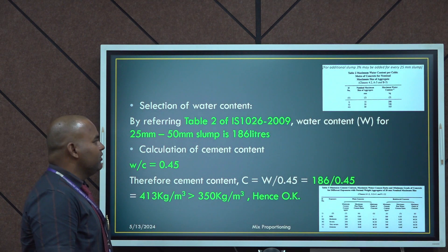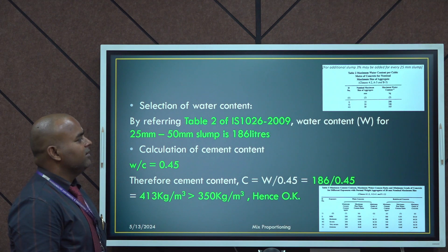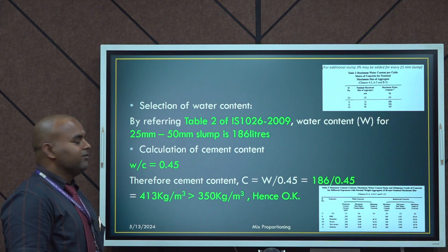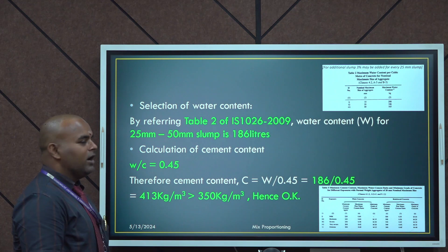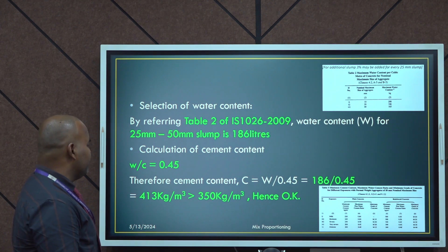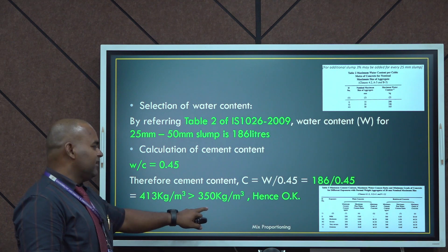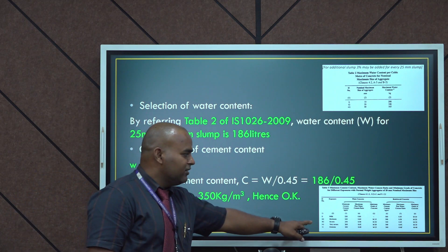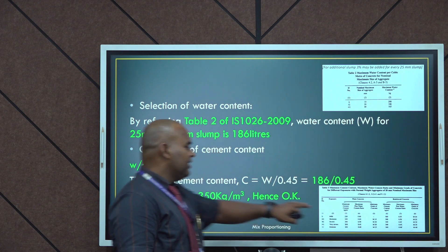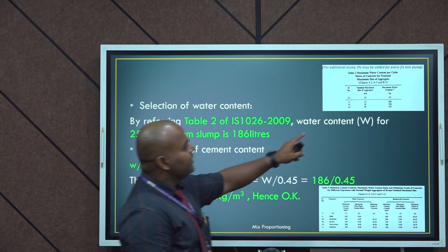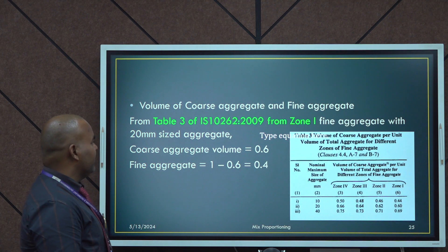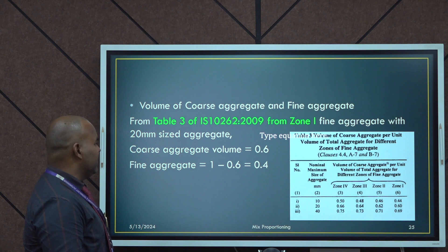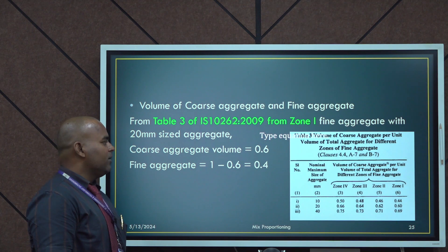Selection of water content: by referring to Table 2 of IS 10262-2009, water content for 25 mm to 50 mm slump is 186 litres. Calculation of cement content: water cement ratio is 0.45, therefore cement content = water content ÷ water cement ratio = 186 ÷ 0.45 = 413 kg per metre cube, which is greater than the minimum of 350 kg per metre cube, hence it is okay. Volume of coarse aggregate and fine aggregate from Table 3 of IS 10262-2009, Zone 1 with 20 mm size aggregate: coarse aggregate volume = 0.6 and fine aggregate = 1 − 0.6 = 0.4.